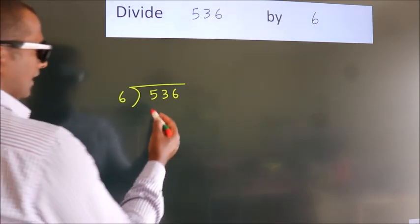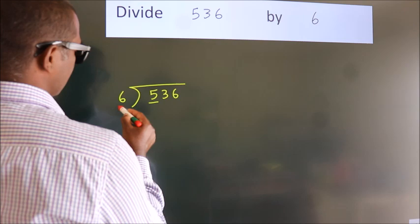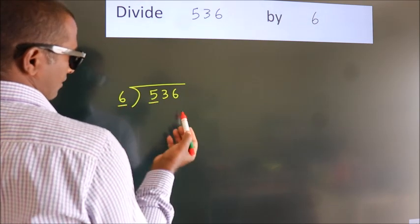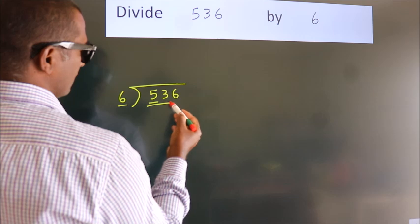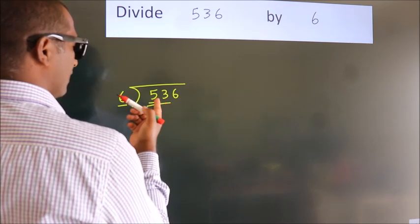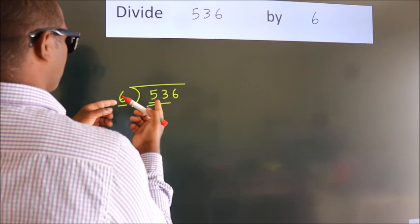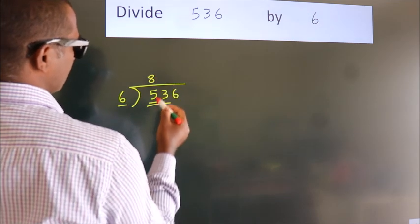Next. Here we have 5, here 6. 5 is smaller than 6, so we should take 2 numbers: 53. A number close to 53 in the 6 table is 6 times 8, 48.